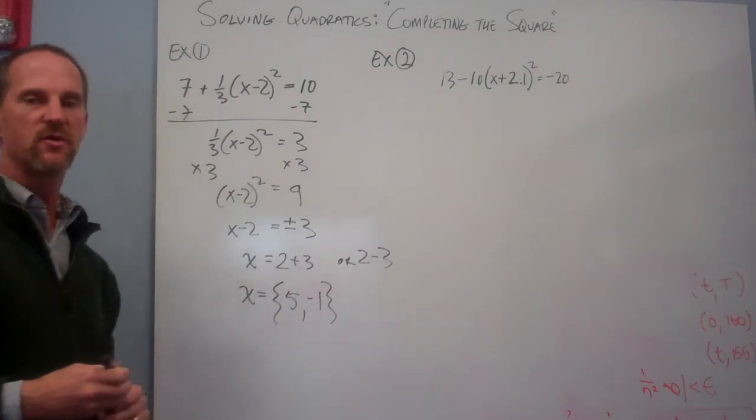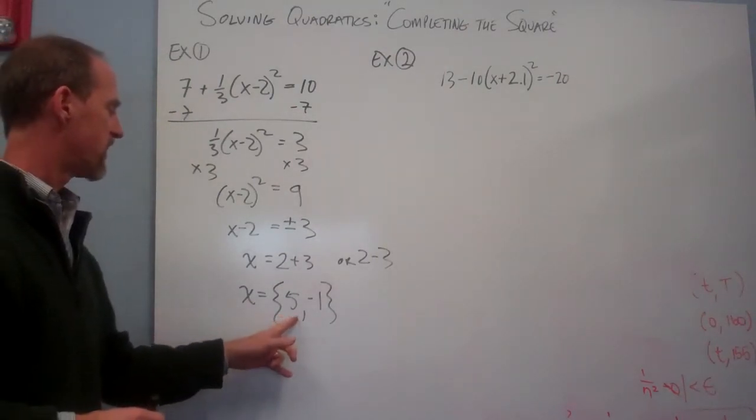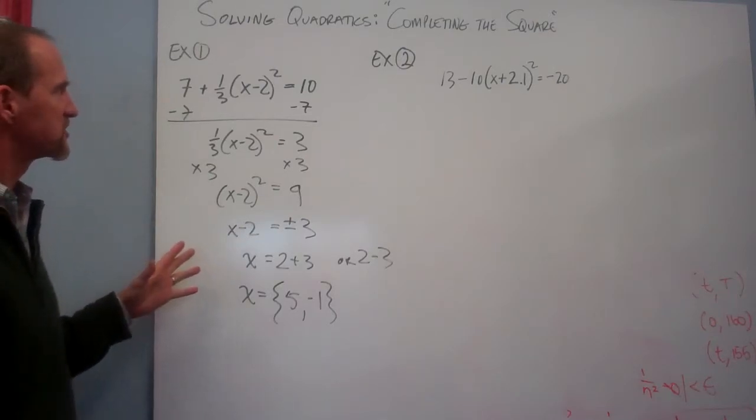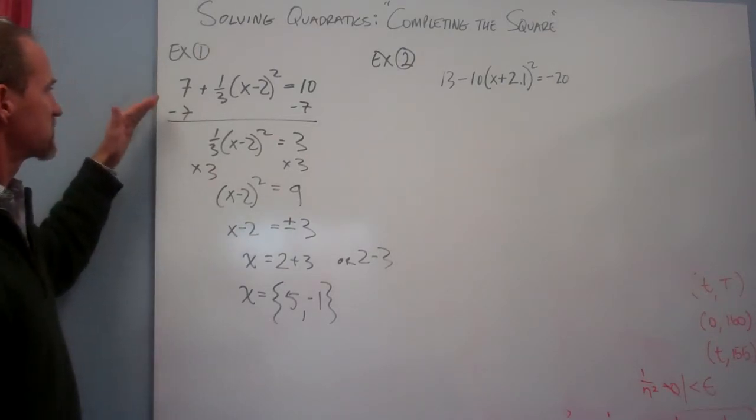So my solutions are x, and I'll use bracket notation here, 5 and negative 1. And 2 minus 3 is negative 1. That's not a point. Those are the two solutions for x, 5 and negative 1. So this is a very powerful technique that has to be set up just right for us. And we can get a solution to anything.